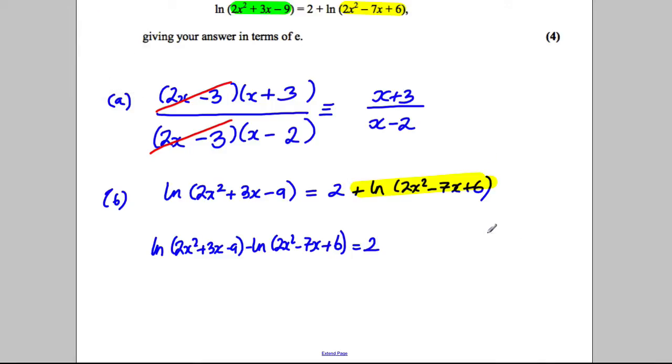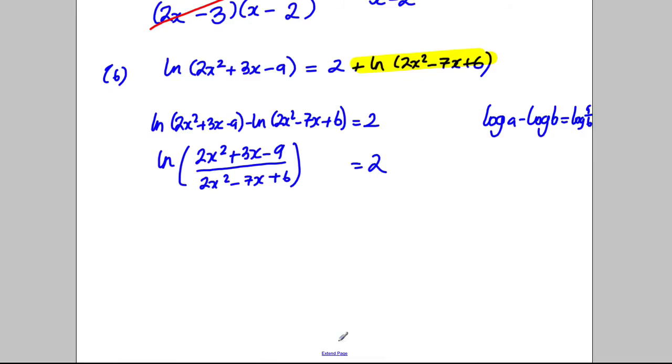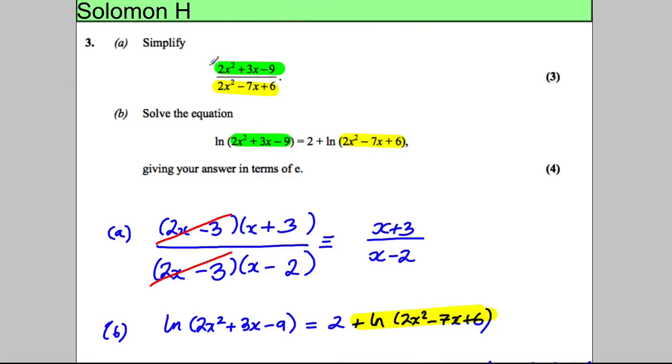My log laws say that log a take away log b is log(a divided by b). So these two subtracted are the natural logarithm of (2x² + 3x - 9) divided by (2x² - 7x + 6), and that's going to be equal to 2.